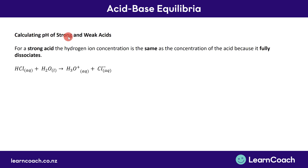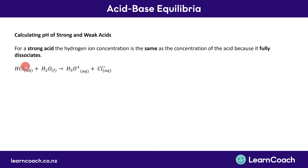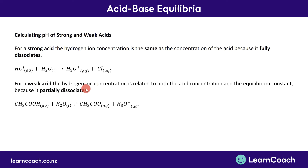Let's use the concepts we've learned to work out the pH of strong and weak acids. For a strong acid, the hydrogen ion concentration is the same as the concentration of the acid, because it fully dissociates. All of the HCl is reacting to form H₃O⁺ and Cl⁻. Because there is a 1-to-1 ratio of HCl to H₃O⁺, the concentration of HCl equals the concentration of H₃O⁺. For a weak acid it's more complicated, because you can't just say all of it has turned into H₃O⁺. We need to look at the equilibrium constant and the acid concentration to work out the pH.